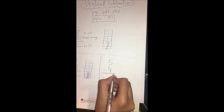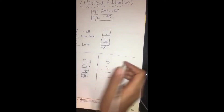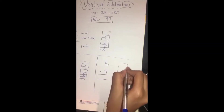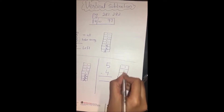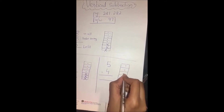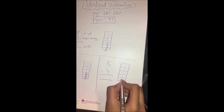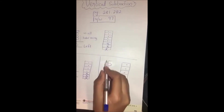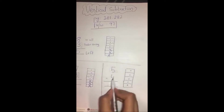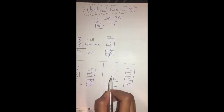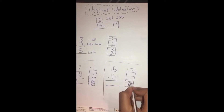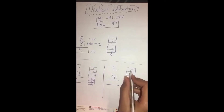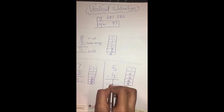Now we have 5 minus 4. Let's make a block: 1, 2, 3, 4, 5. How many in all? 5. How many are we going to take away? 4. 1, 2, 3, 4. How many left? 1. They left 1. Exactly.